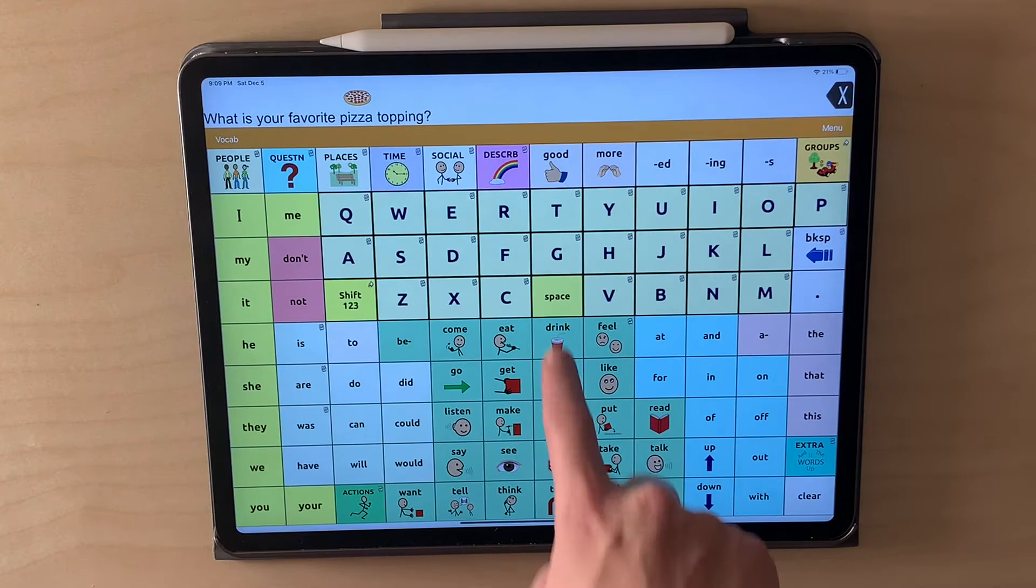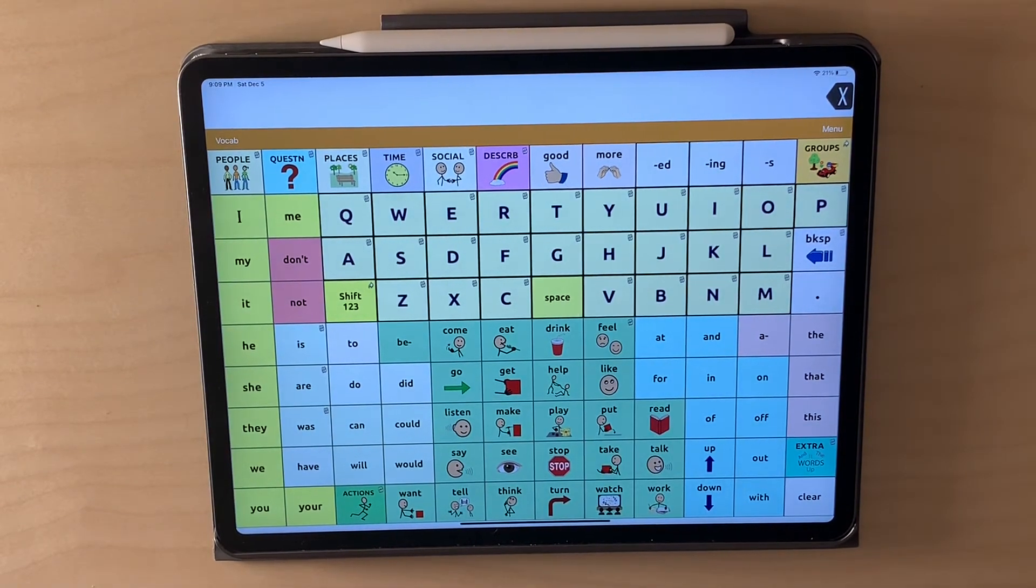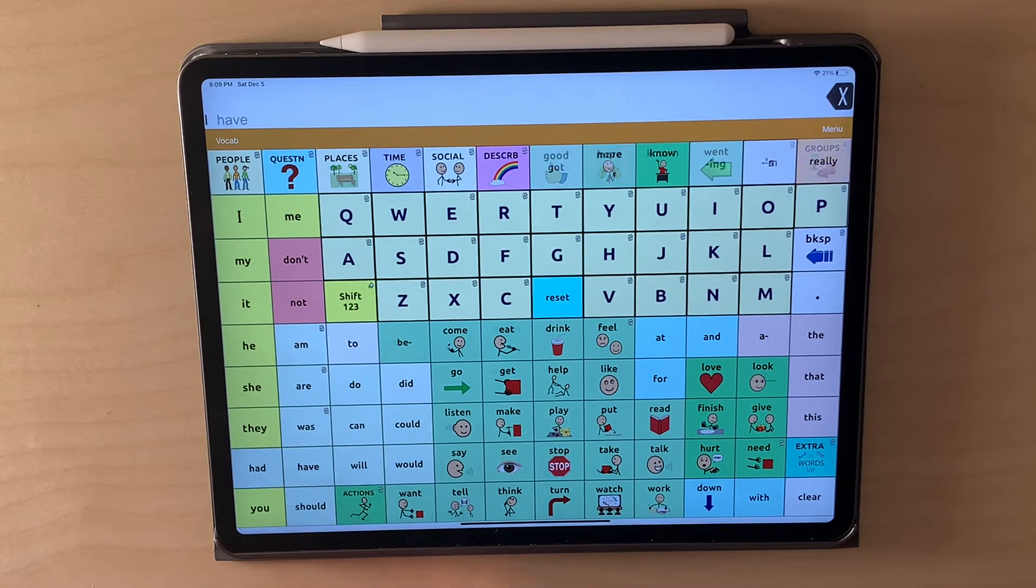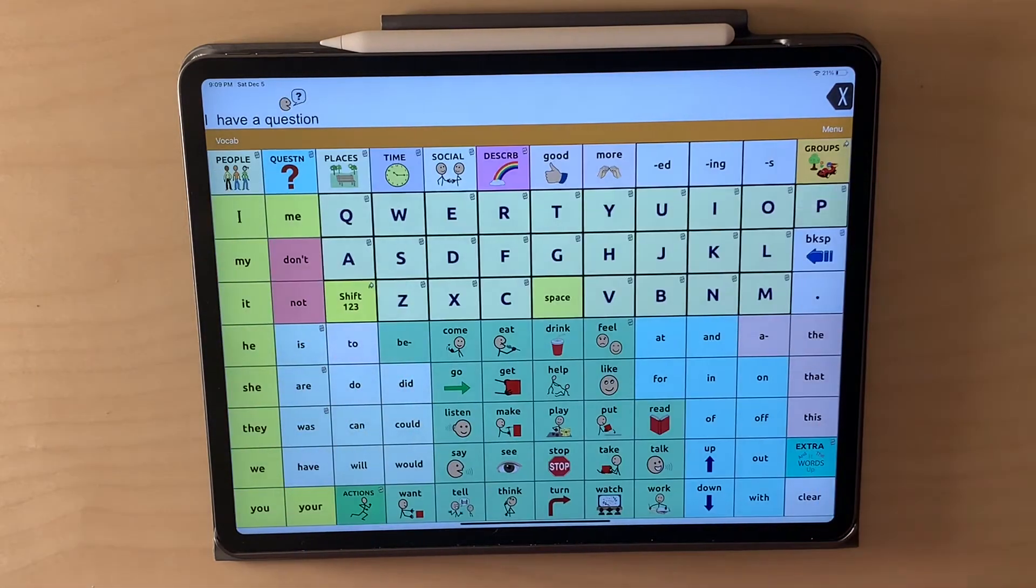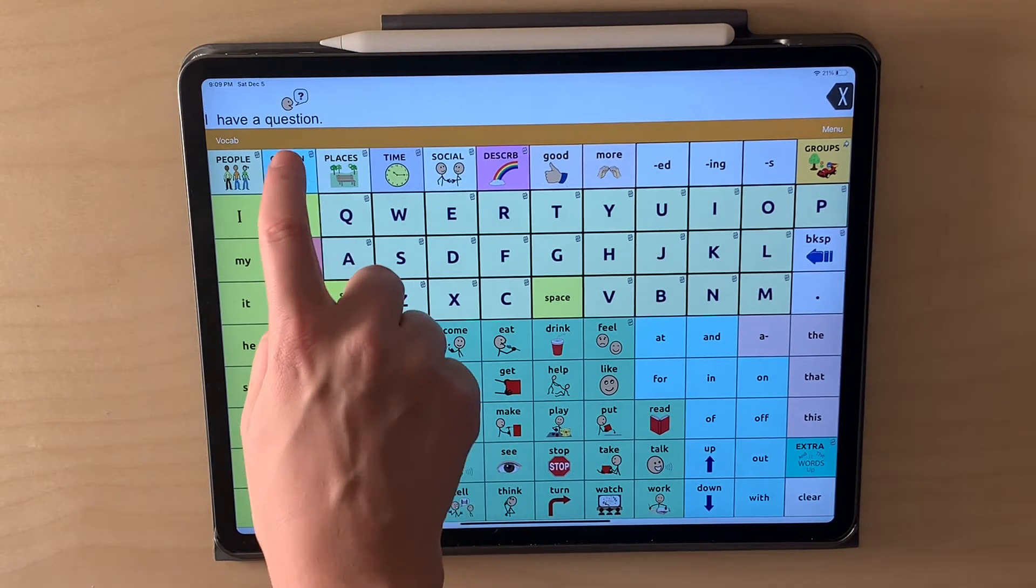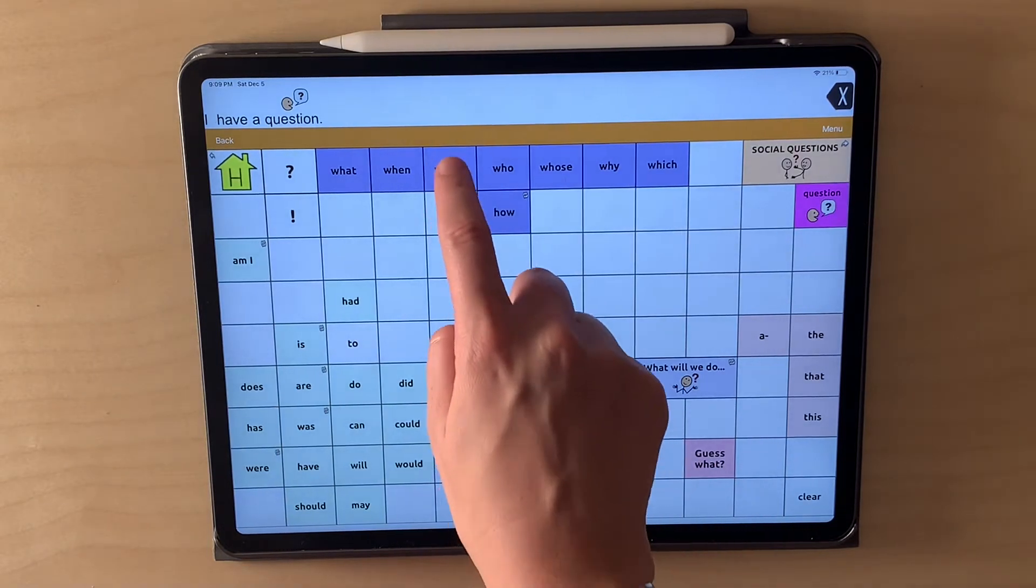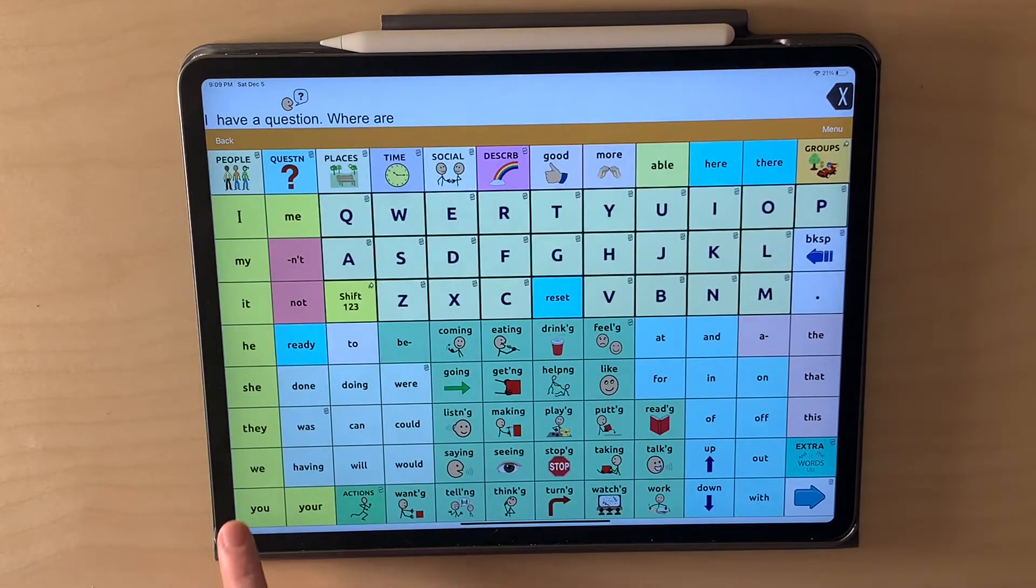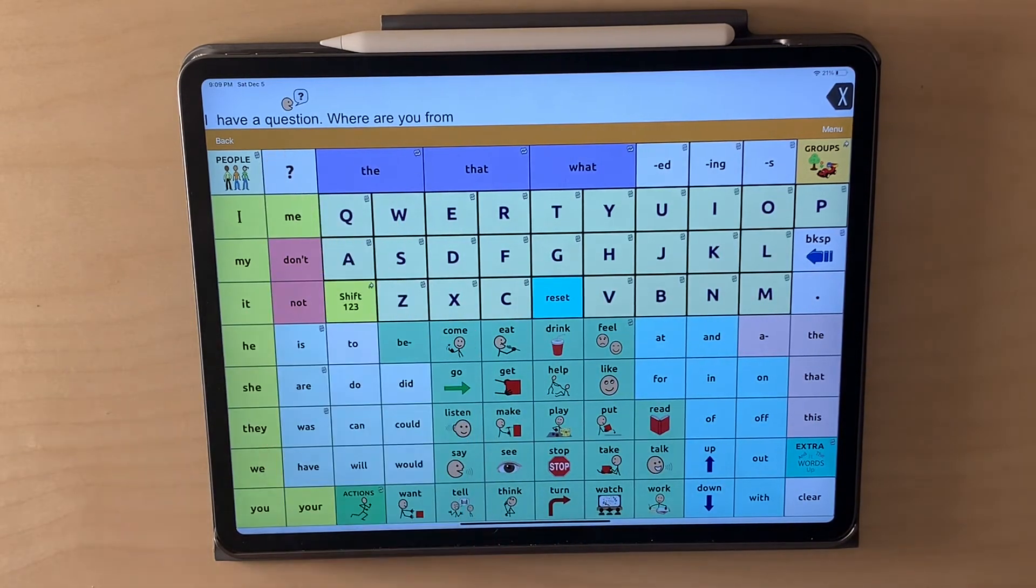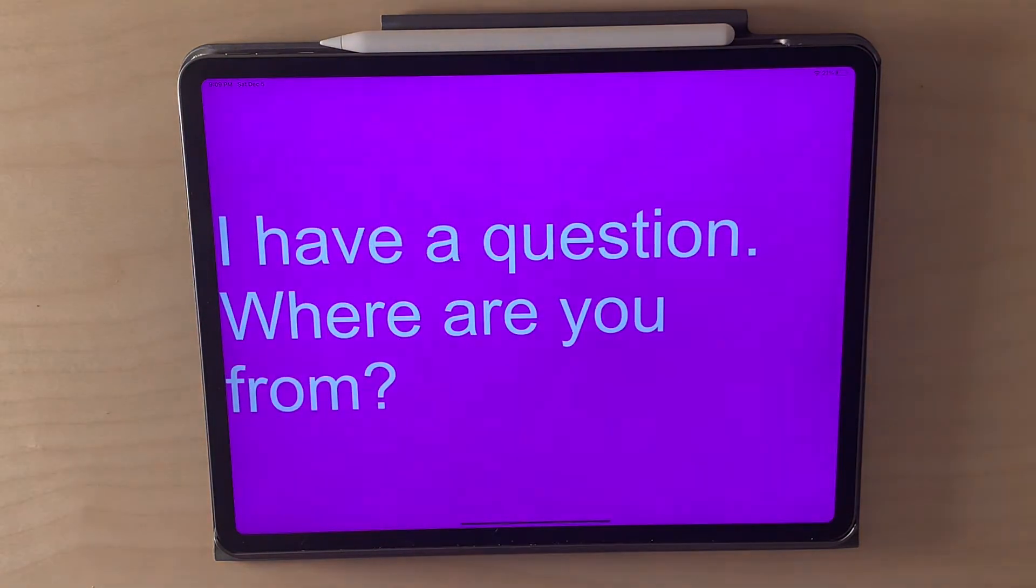And then to clear I can just do a quick swipe down for example. So if I say I have a question. Where are you from? I have a question. Where are you from?